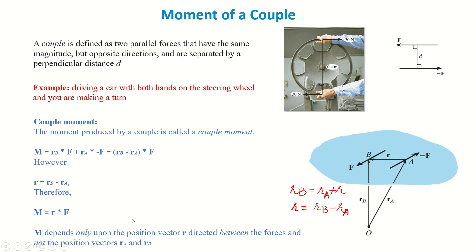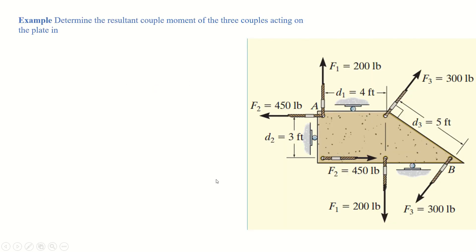Therefore M equals R cross F, where R is the position vector between the two forces F and negative F. So M depends on R, and if this distance R is large, the moment will also be large.